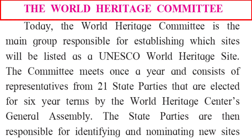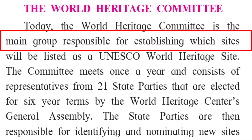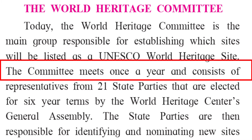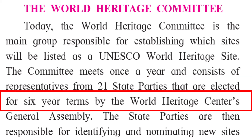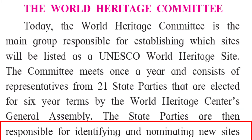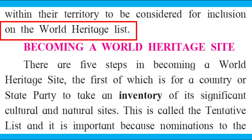The World Heritage Committee. Today, the World Heritage Committee is the main group responsible for establishing which sites will be listed as a UNESCO World Heritage Site. The Committee meets once a year and consists of representatives from 21 states parties that are elected for six-year terms by the World Heritage Center's General Assembly. The state parties are then responsible for identifying and nominating new sites within their territory to be considered for inclusion on the World Heritage List.